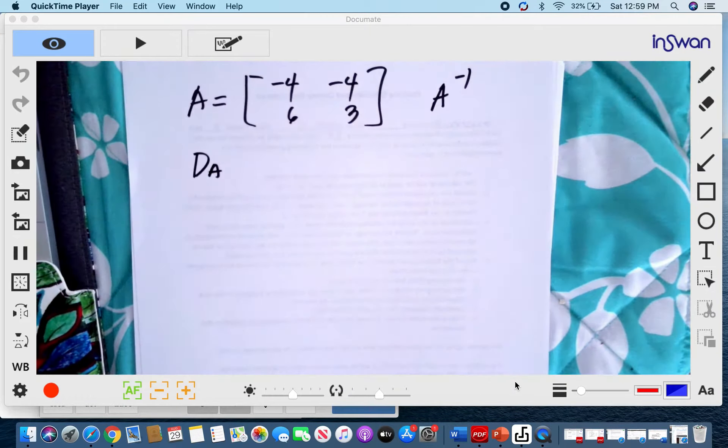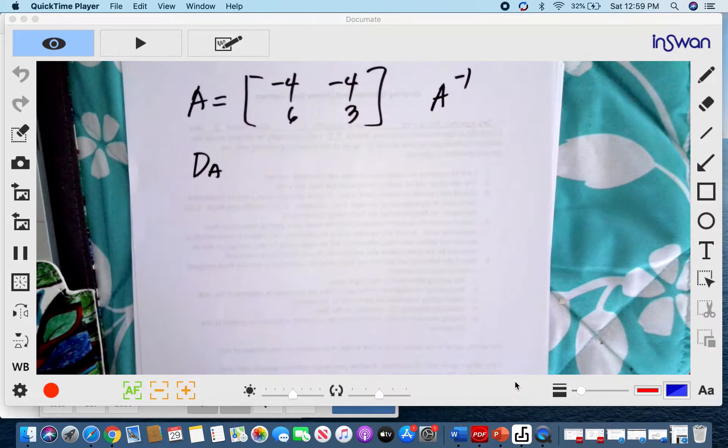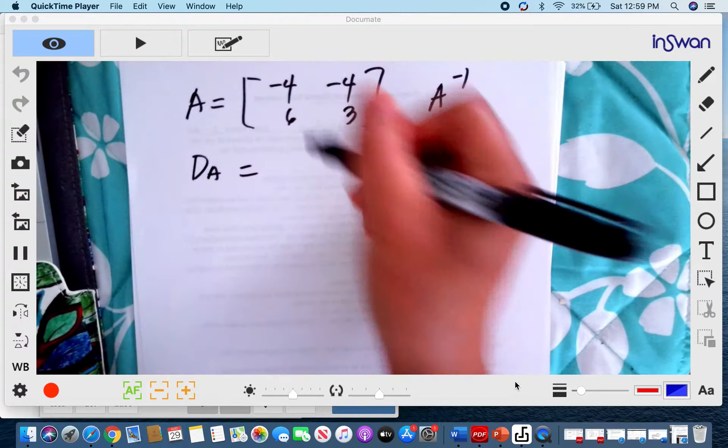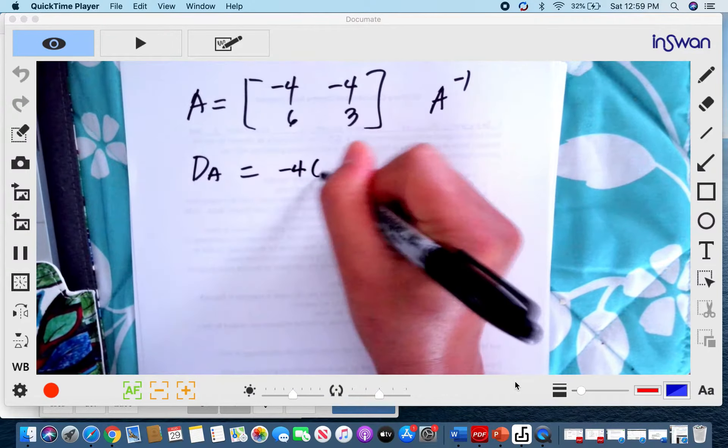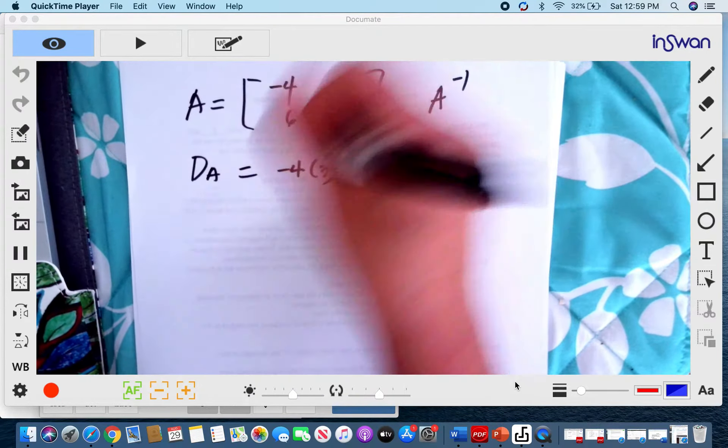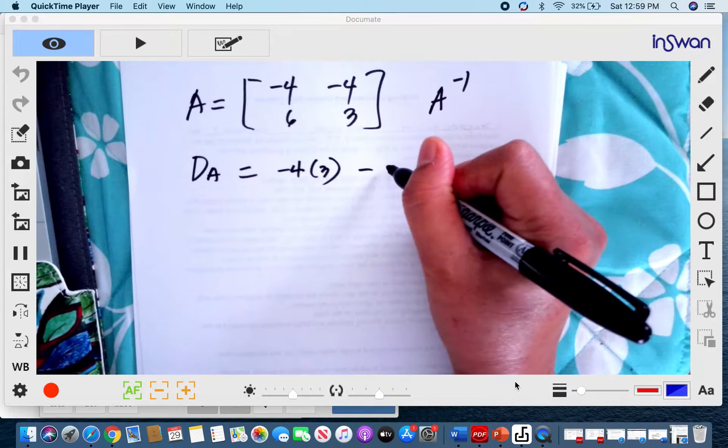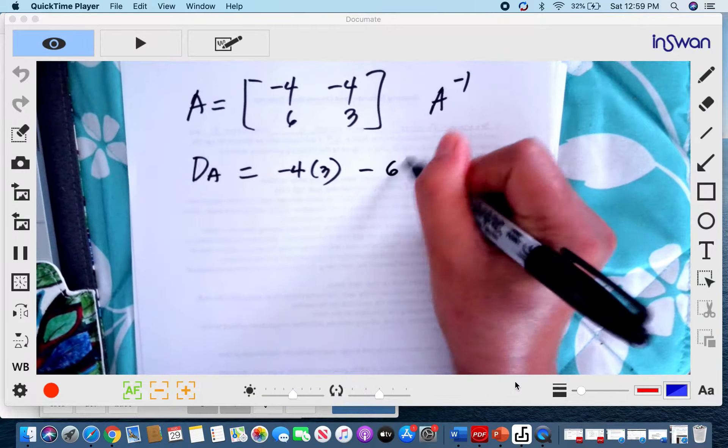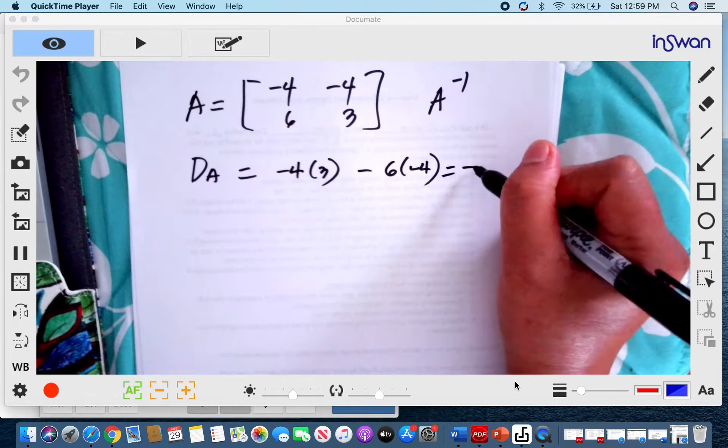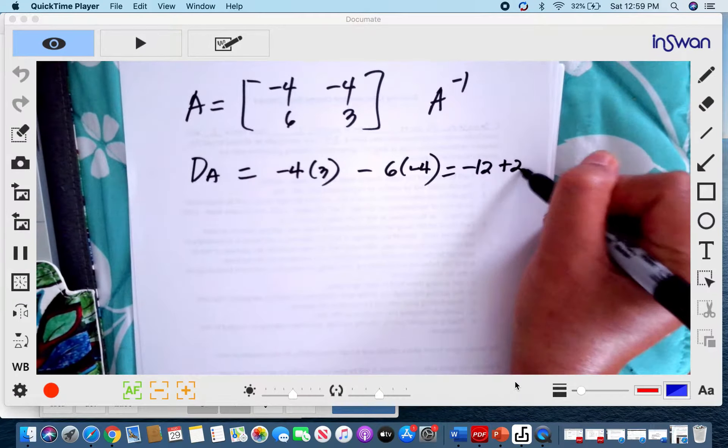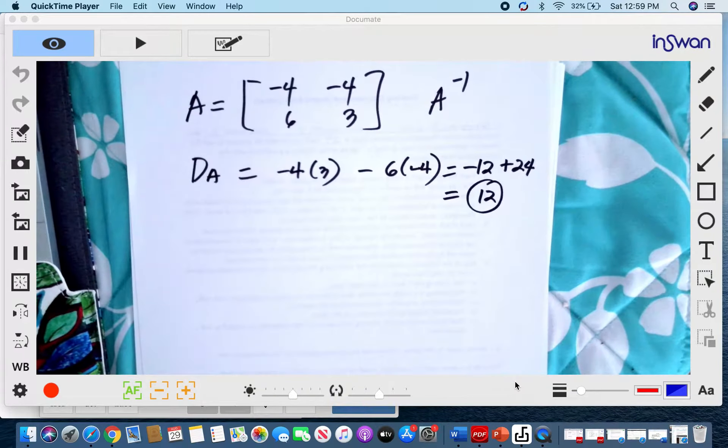The determinant of a matrix equals the difference between the cross-products. We get the cross-product for the down element, so that's -4 times 3, minus the product of the up element, that's 6 times -4. This gives us -12 + 24, so our determinant is 12.